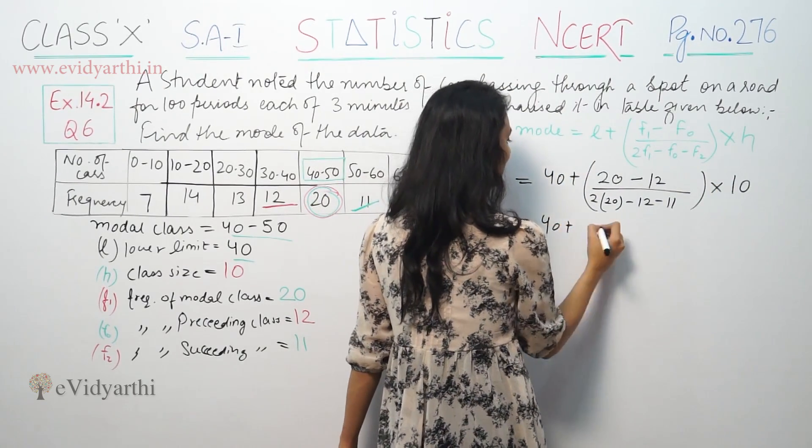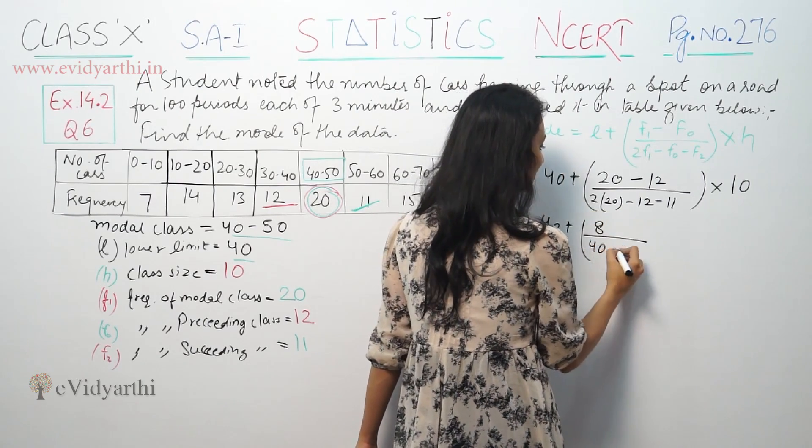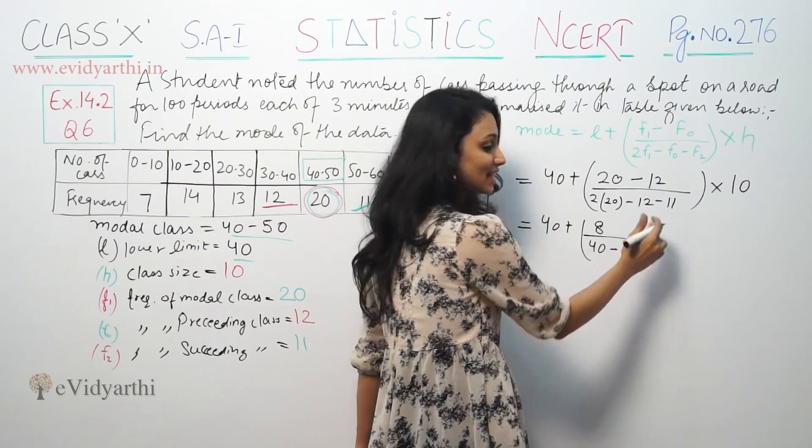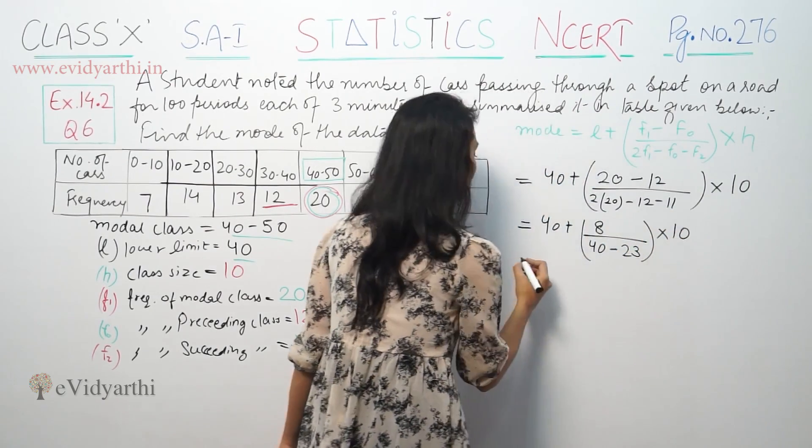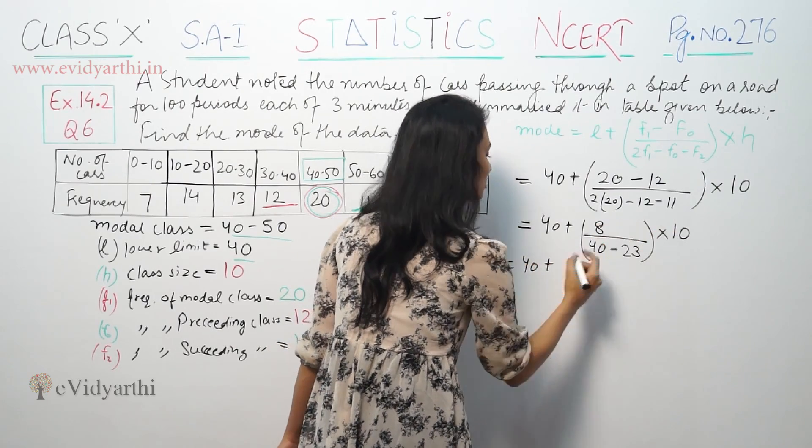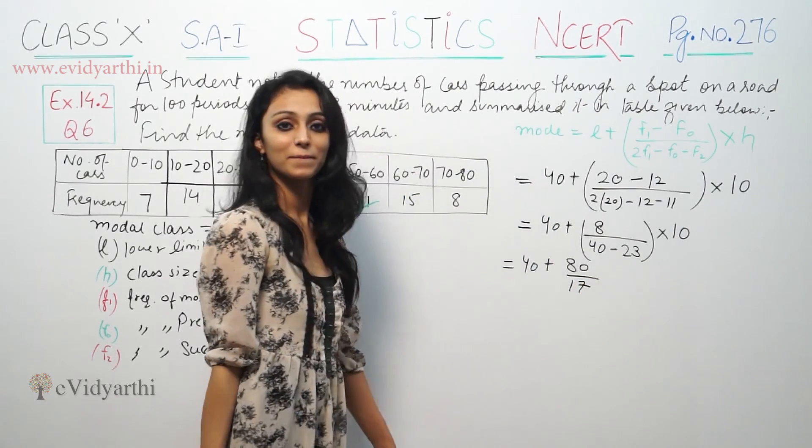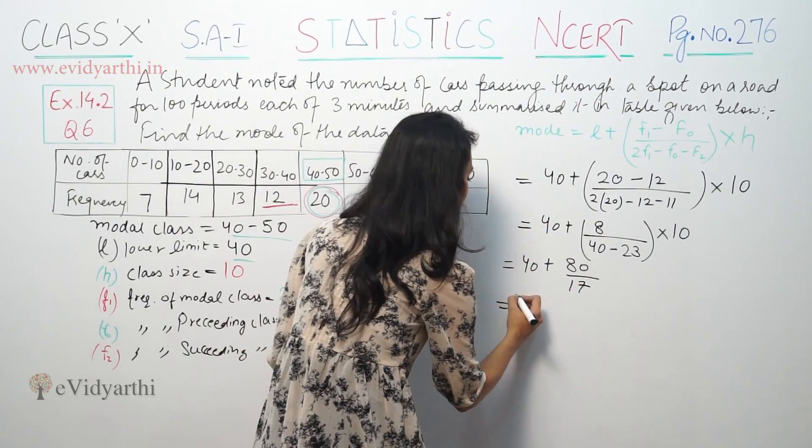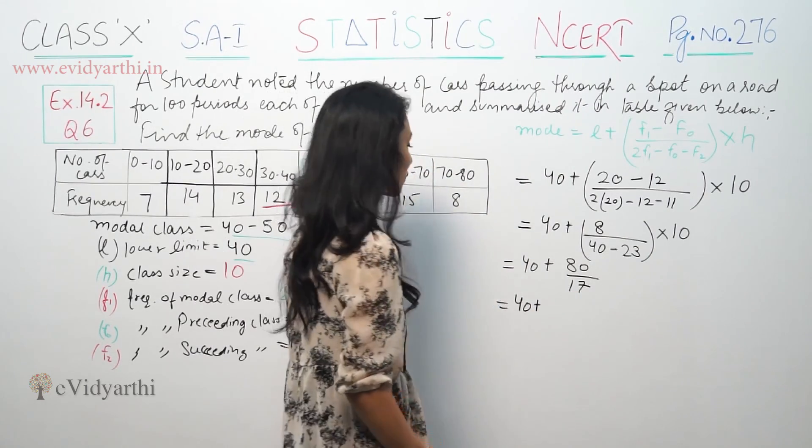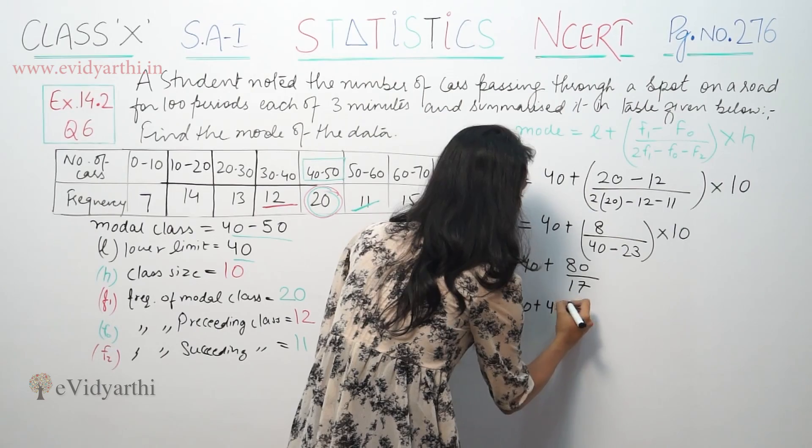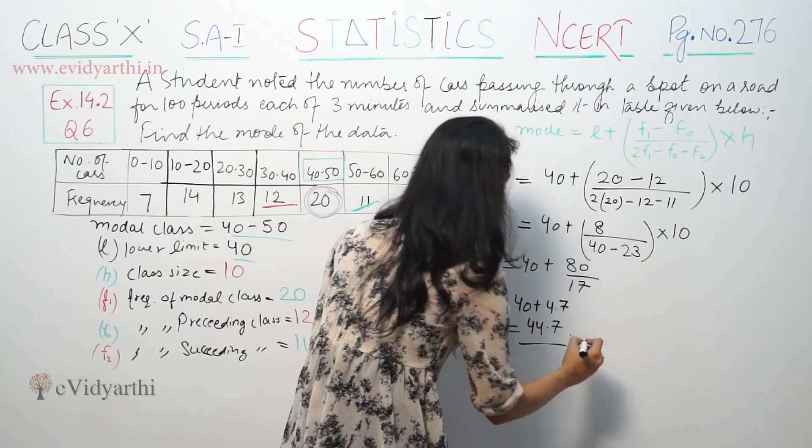2 into 20 minus F0, 12, and F2, 11. 2 into 20 is 40, minus 12 minus 11 means minus minus plus, 23 into 10. You have 40 plus 8 into 10 is 80 upon 17. 80 by 17, 17 divided by 80, 4.7. So you will get 44.7.